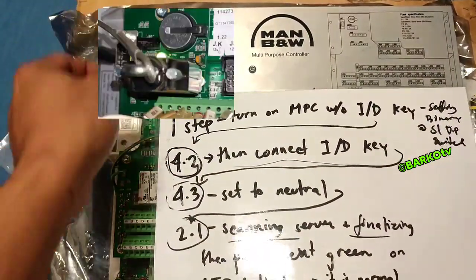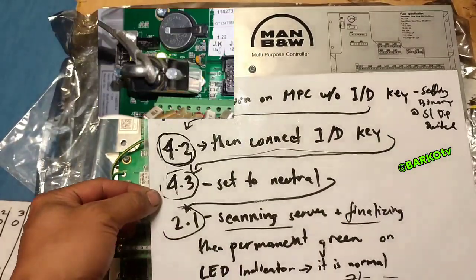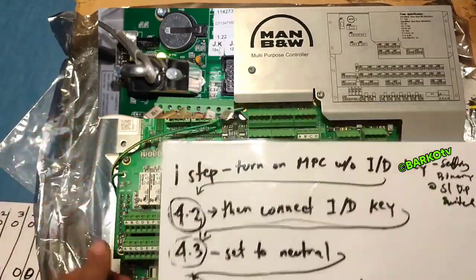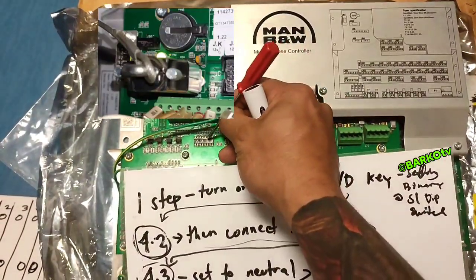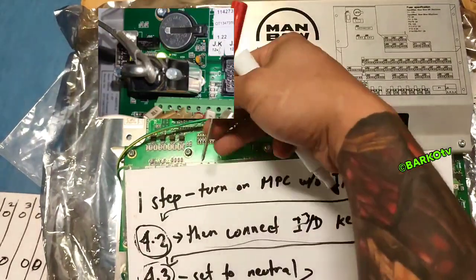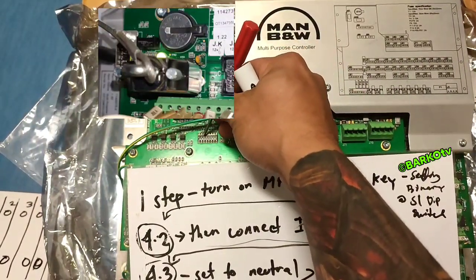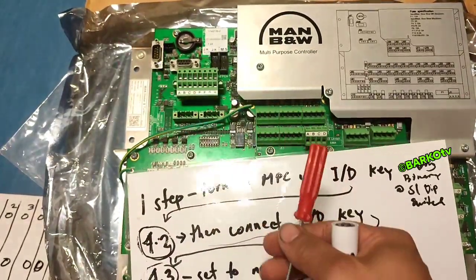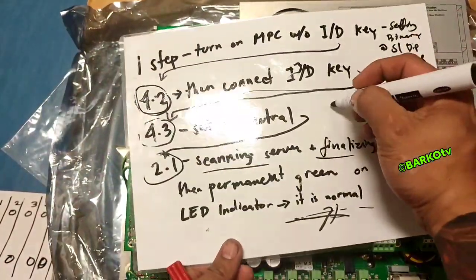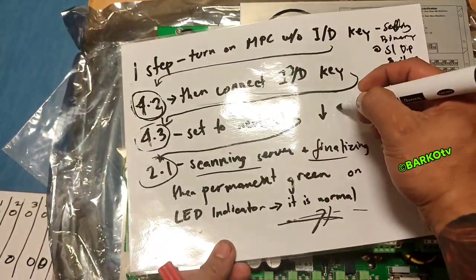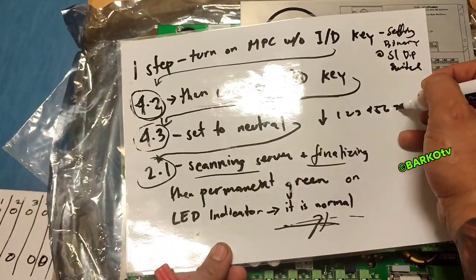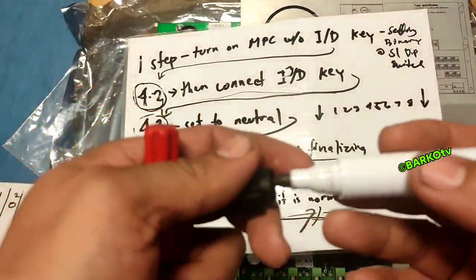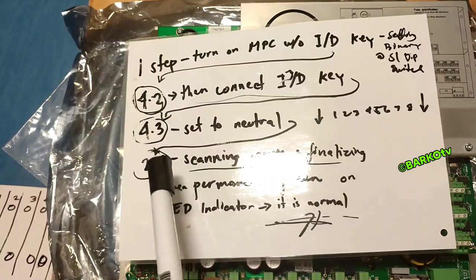Once you connect, wait for the alarm 4-3: four red and then two green, then three green. After that, set to neutral. To set neutral, put all switches going downward — one, two, three, four, five, six, seven, eight — set all to zero, going down to neutral.